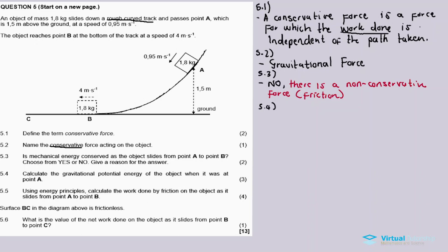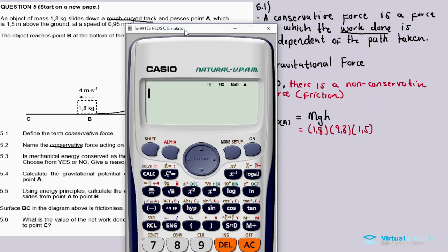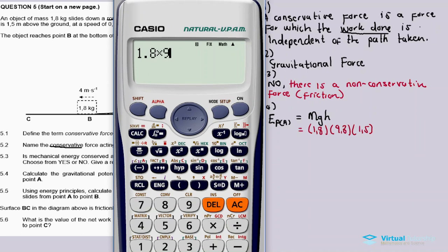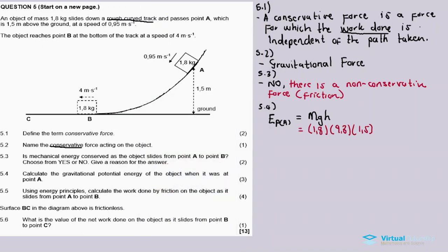5.4: Calculate the gravitational potential energy of the object when it was at point A. This is a straightforward one. The potential energy at point A equals mass times gravitational acceleration times height. Mass is 1.8 kg, gravitational acceleration is 9.8, and height is 1.5 m. So 1.8 × 9.8 × 1.5 = 26.46 joules.